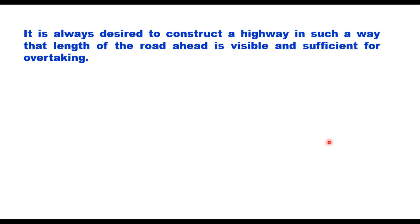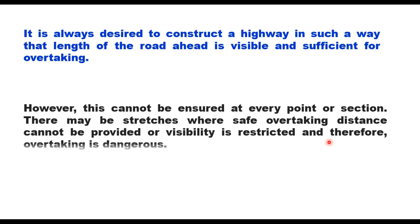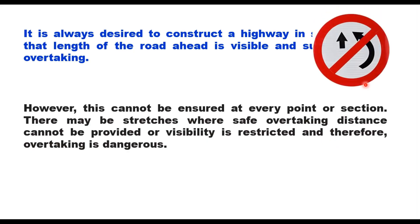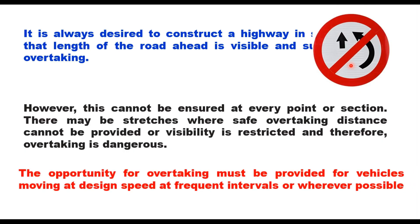It should be sufficient for overtaking operations. However, this cannot be ensured at every point or section of the highway. There may be stretches where safe overtaking distance cannot be provided, or visibility is restricted, making overtaking dangerous — due to topography, or obstructions like a building or bridge. Wherever it is not possible to provide overtaking sight distance, we indicate through a sign that overtaking is prohibited.